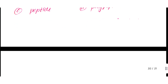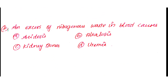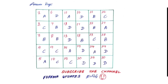Question number 30: An excess of nitrogenous waste in blood causes. Option A: Acidosis. Option B: Alkalosis. Option C: Kidney stones. Option D: Uremia. The answer is Option D: Uremia.